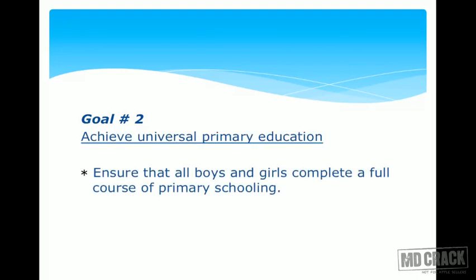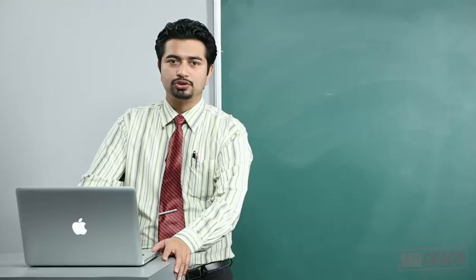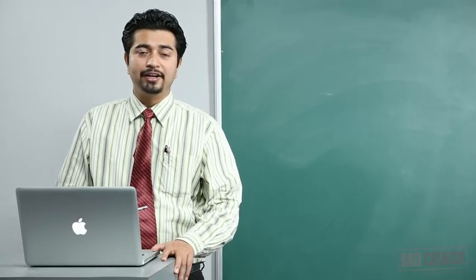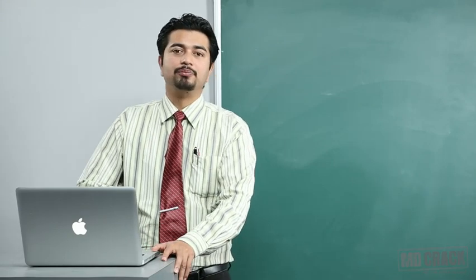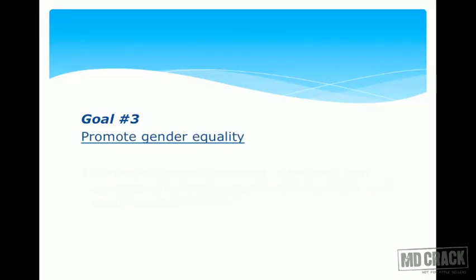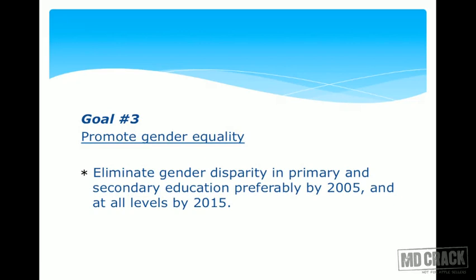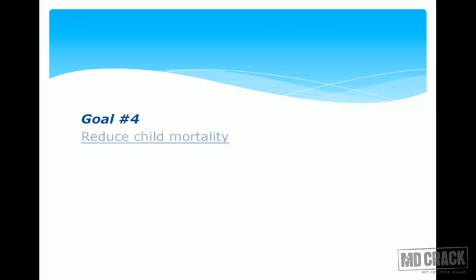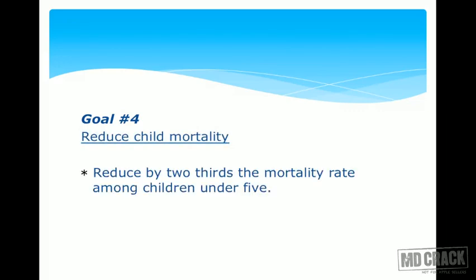Goal 2: Achieve universal primary education — ensure that all boys and girls complete a full course of primary schooling. In India, primary education has been made compulsory for everybody. Goal 3: Promote gender equality — eliminate gender disparity in primary and secondary education preferably by 2005 and definitely by 2015. Goal 4: Reduce child mortality — reduction by two thirds in children under 5.